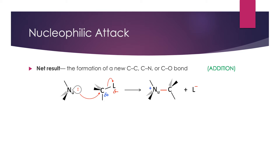Let's start with nucleophilic attack. As you might expect, this involves a nucleophile that attacks or donates its electrons to another species. The key point of a nucleophilic attack is the formation of a new bond — typically a carbon-carbon, carbon-nitrogen, or carbon-oxygen bond. It's shown diagrammatically here where the nucleophile has a pair of non-bonding electrons that can be extended to attack an electron-deficient center on another molecule, drawn as a partial positive charge on carbon and a partial negative charge on L.